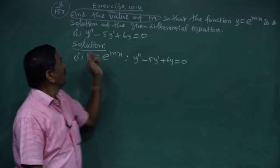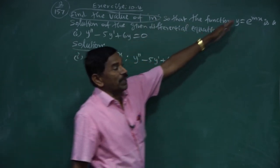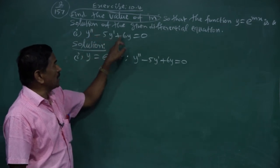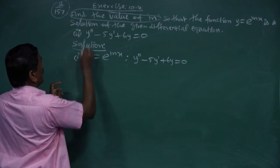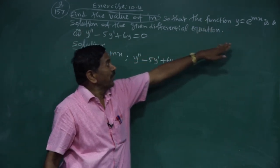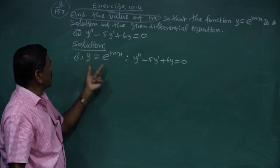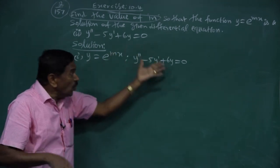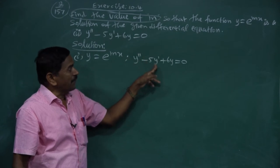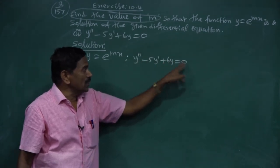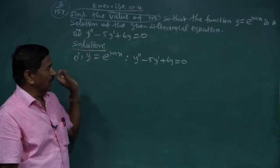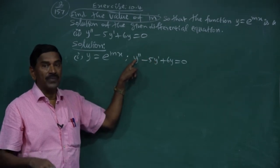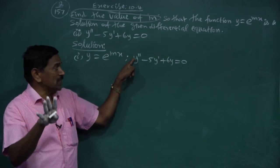Now, second sub-question: find the value of m so that y = e^(mx) is a solution of the differential equation y'' - 5y' + 6y = 0. Since it involves y'', we differentiate twice.